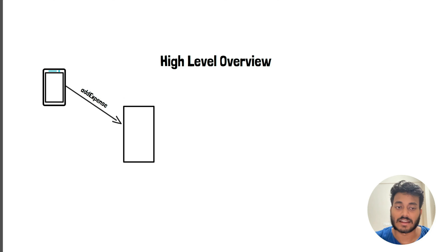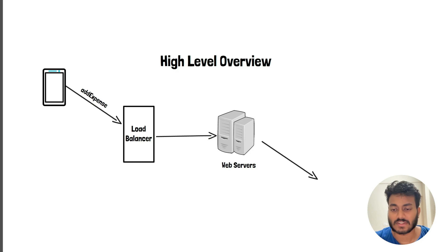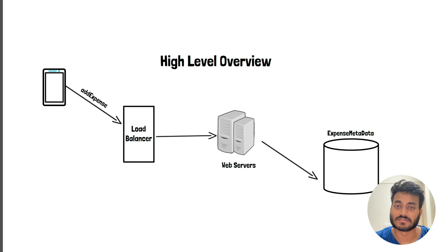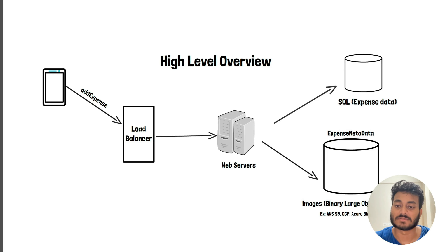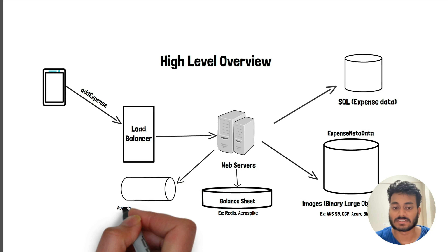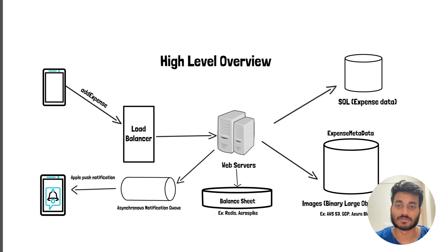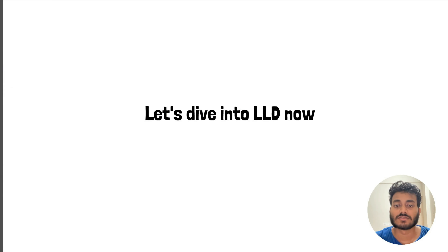For the high-level overview, a user can add an expense through a load balancer which accesses our web servers. The web servers process the request and save expense information in MySQL, while balance sheet updates go to the key-value store — Redis or Aerospike. On successful update, it should notify other members asynchronously via a notification queue using Apple Push Notification or another mobile push notification service.